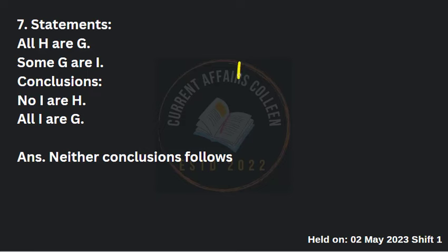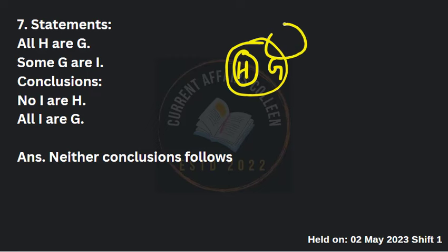Seventh question: syllogism with statements involving H, R, G, and I. All H are G, and the conclusions involve G, R, and I. Checking the conclusions against the given statements, neither conclusion follows from the given premises.